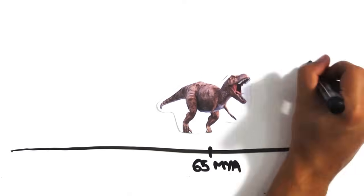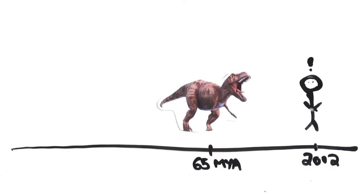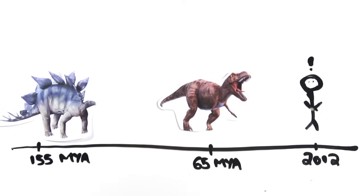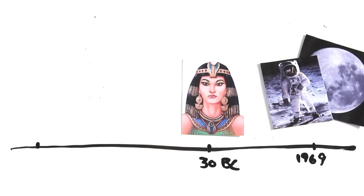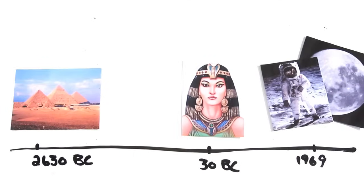The Tyrannosaurus, in terms of time, is closer to today than to when the Stegosaurus roamed the Earth. To the same token, Cleopatra lived closer to the first moon landing than to the construction of the pyramids.